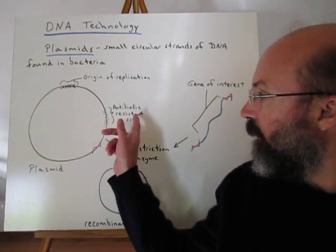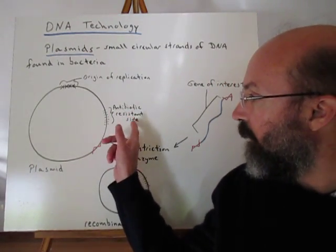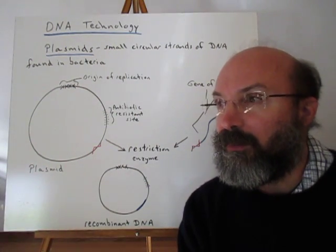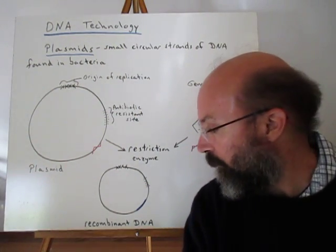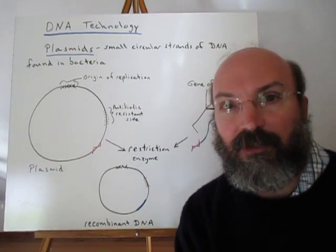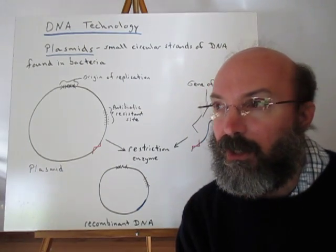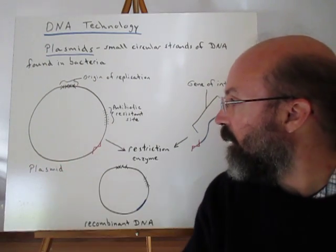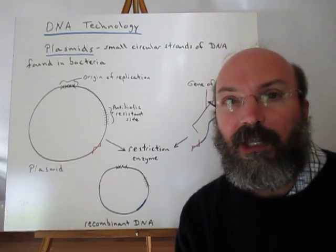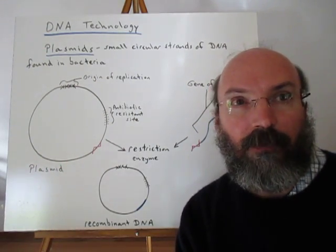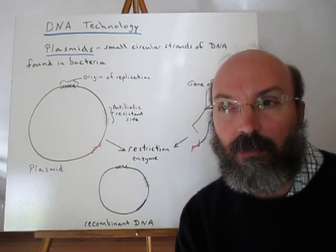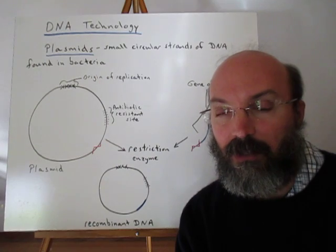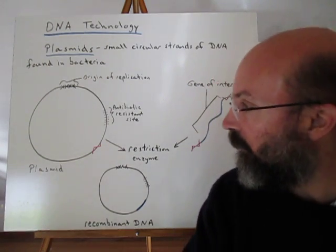Usually there's some antibiotic resistance site within the plasmid. Now one of the arguments against recombinant DNAs or GMOs — genetically modified organisms — is that these plasmids contain antibiotic resistant sites. And so if you get enough of these antibiotic resistant organisms out there, it makes our conventional antibiotics not work so well when we need them.